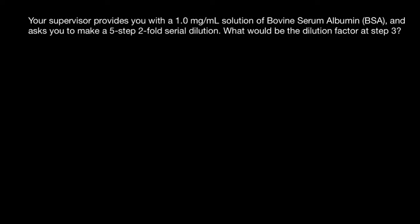Welcome to Nikolai's Genetics Lessons. Today's question is: your supervisor provides you with a one milligram per milliliter solution of Bovine Serum Albumin (BSA), and asks you to make a five-step two-fold serial dilution. What would be the dilution factor at step three?